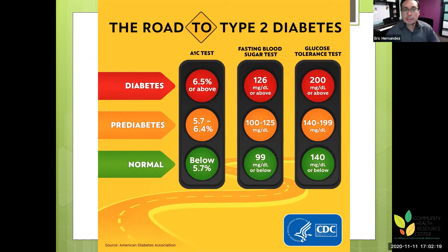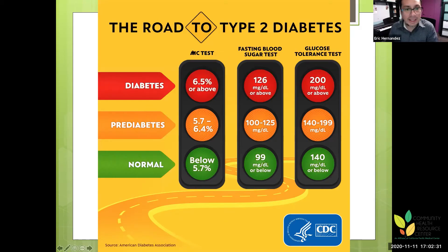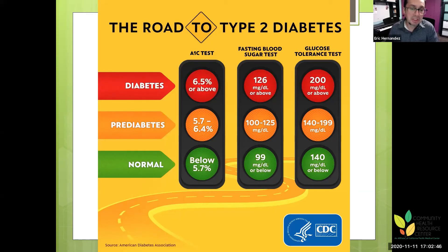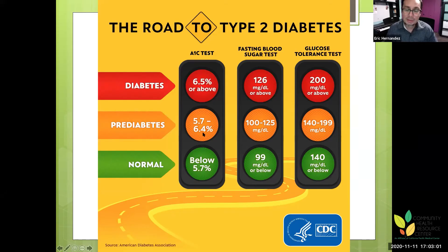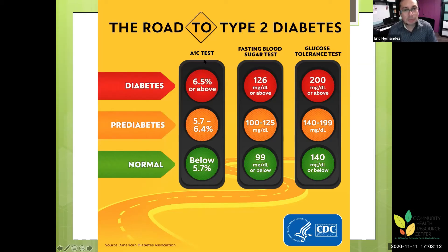At your yearly checkup — or you can call for bloodwork this week — ask specifically for the A1C test. Be aware that some doctors, accustomed to seeing overt diabetics, might say you're doing 'pretty good' when you're actually in the pre-diabetic range of 5.7 to 6.4%. Know your number and ask directly: am I between 5.7 and 6.4%? You want your A1C below 5.7%.